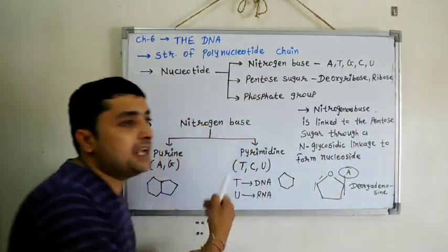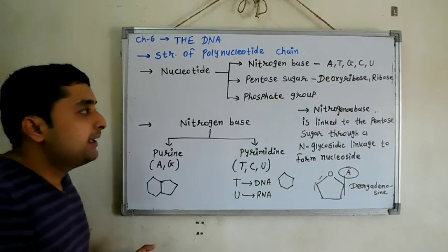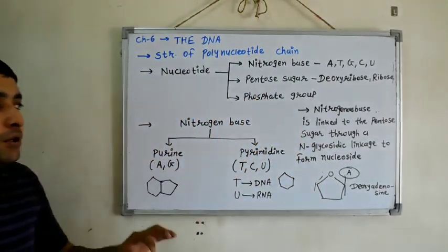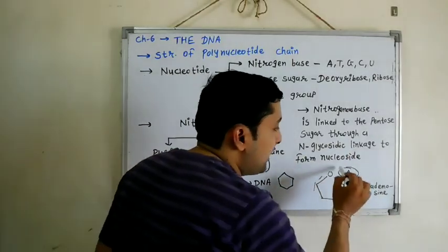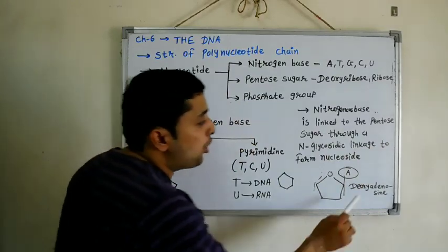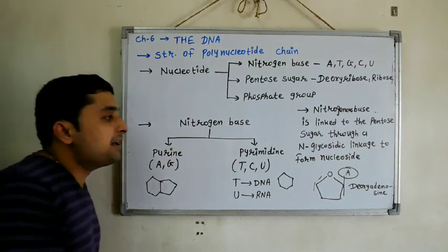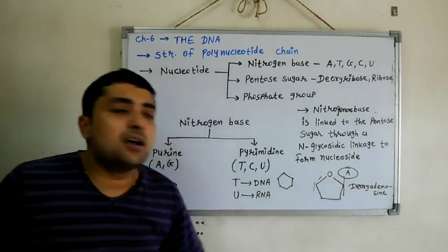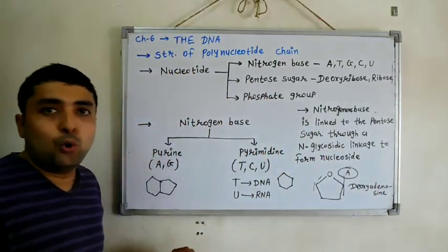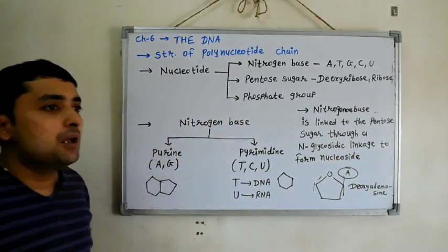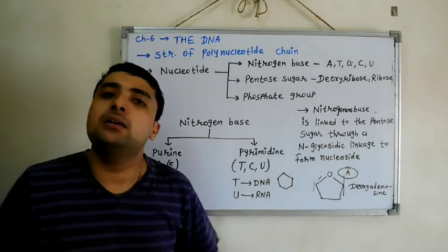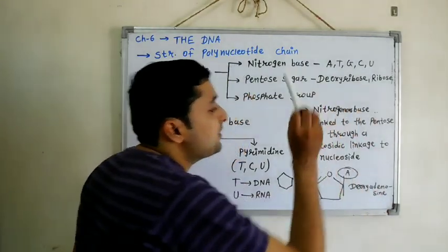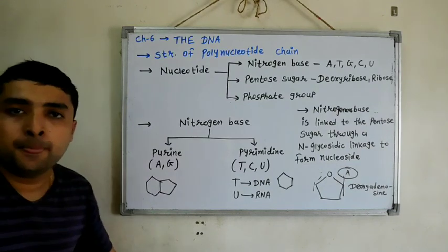Nitrogenous bases such as A, T, G, C, or U - any one is linked to the pentose sugar through an N-glycosidic linkage to form nucleoside. Like here, if adenine is attached, we call it deoxyadenosine. Similarly, deoxythymidine, deoxycytidine. If it's RNA, then it would be like uridine. Only uridine for uracil, because in that there is ribose sugar, not deoxyribose sugar. Okay, clear? So like here adenine - that is deoxyadenosine. If cytosine, then deoxycytosine.